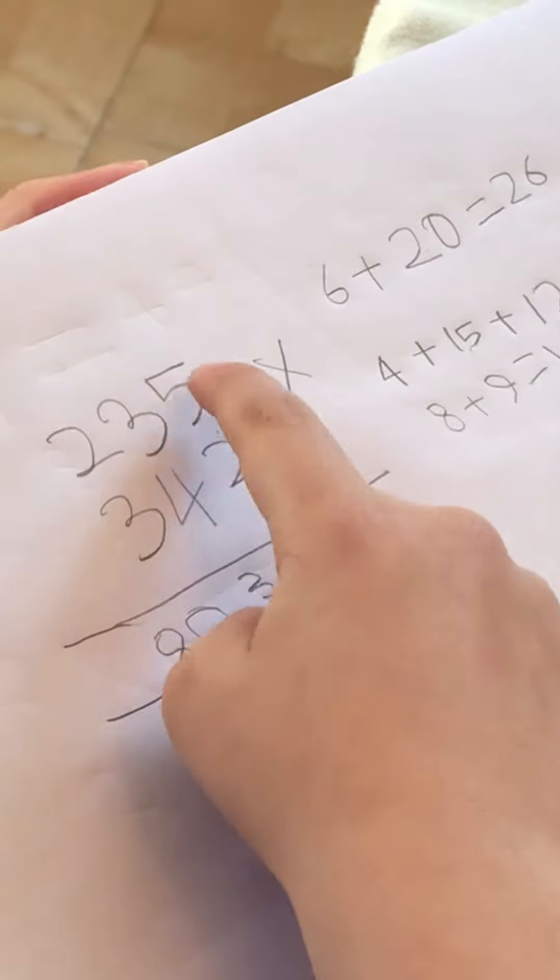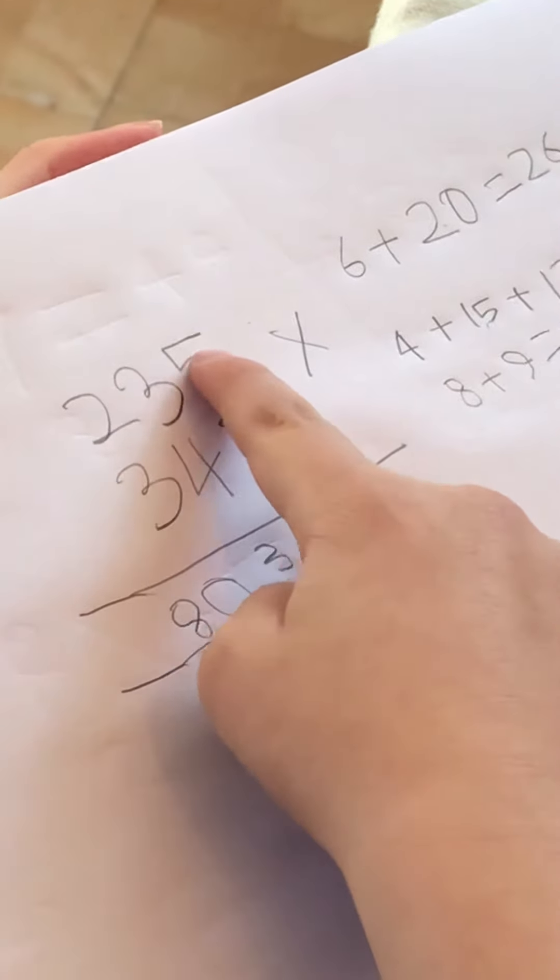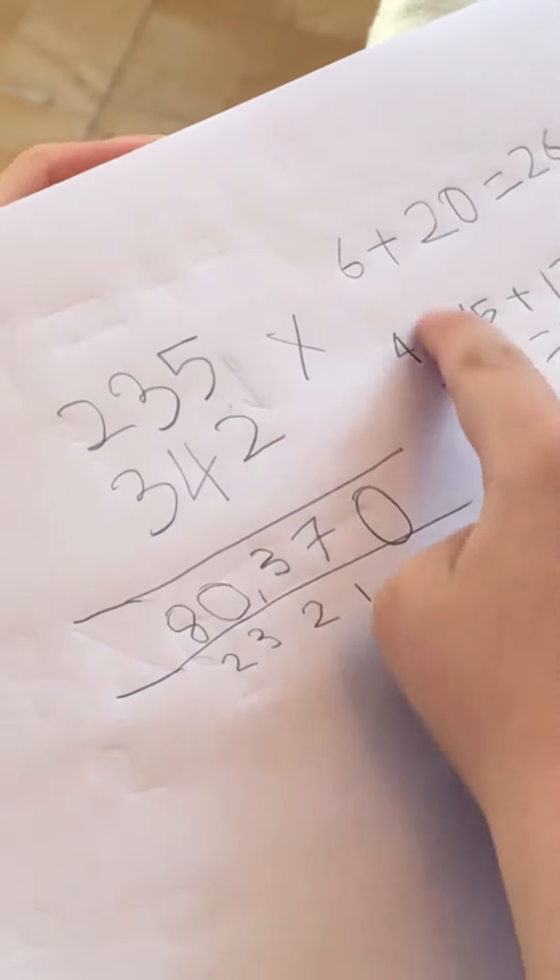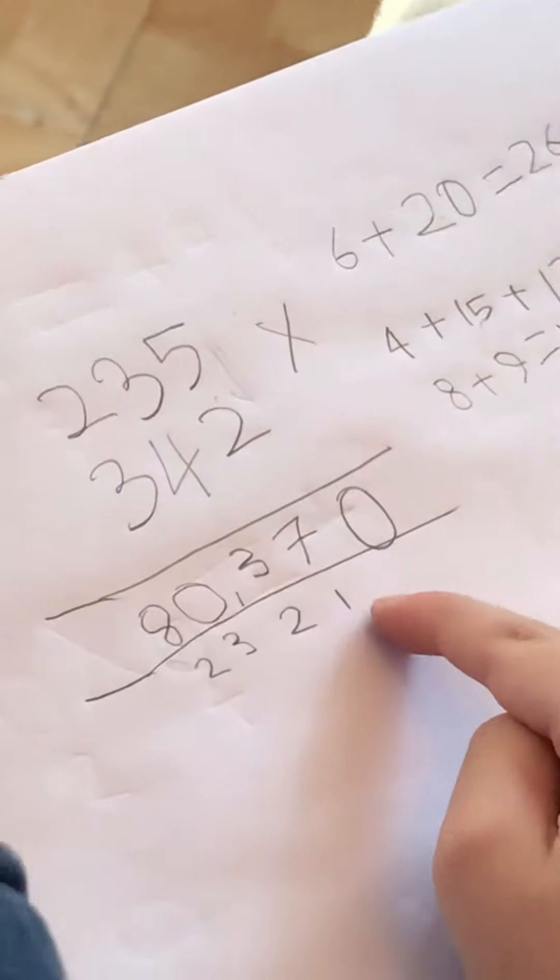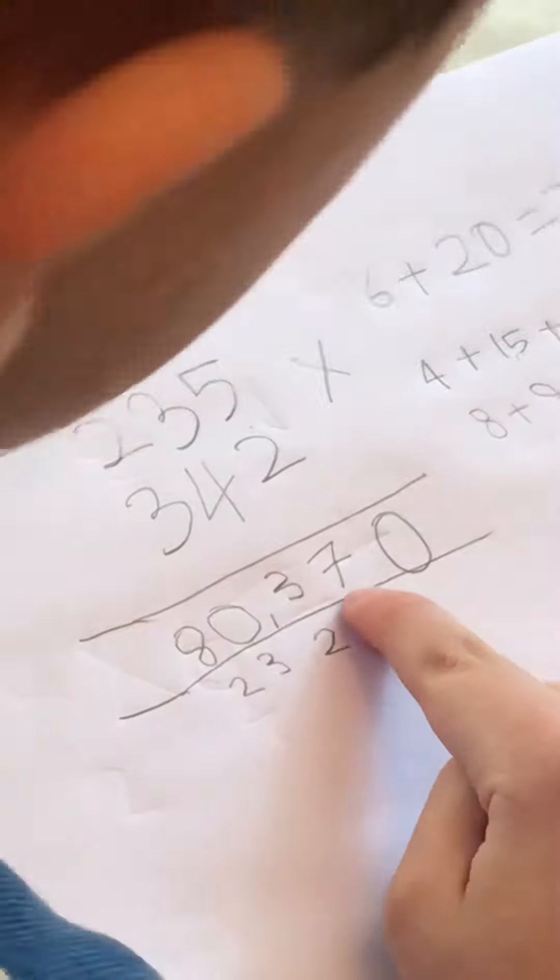And then you cross again and 5 times 4 which is 20, that gives us 26, and because this 1 is there gives us 7, and because the 2 is here, we keep that there.